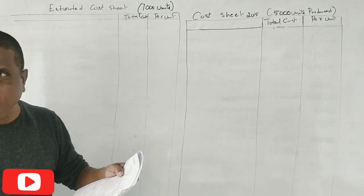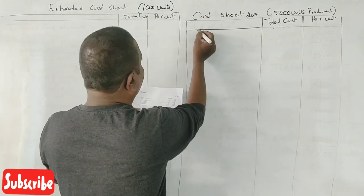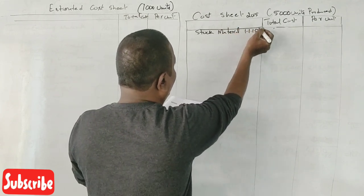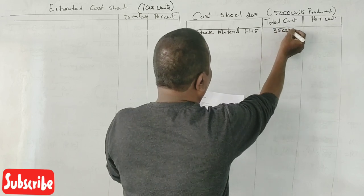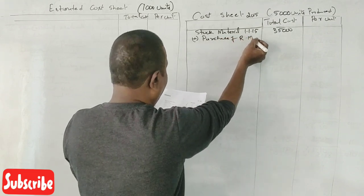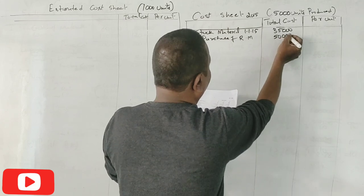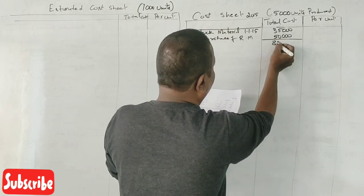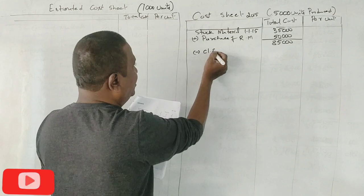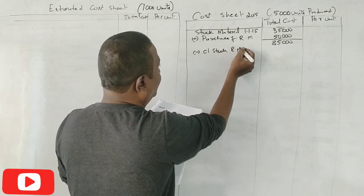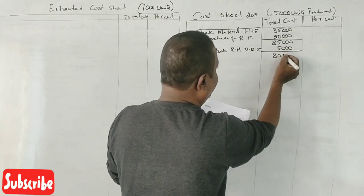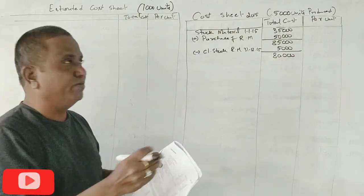Material consumed is not directly given. Whenever stock figures are given, we calculate it. Stock of materials on 1-1-15 is ₹35,000. To this, purchase of raw material is ₹50,000. So totally we have ₹85,000 worth of materials in the year 2015. From this ₹85,000, the closing stock of raw material on 31st December 2015 is ₹5,000. That means totally ₹80,000 of materials were used to manufacture 5,000 units.